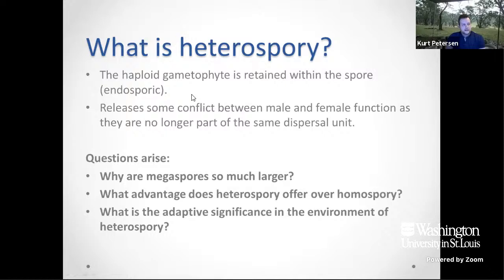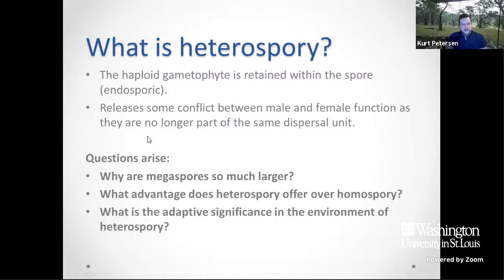Another feature of heterospory is that the haploid gametophytes are retained within the spore — they don't grow out and become a photosynthetic unit; they develop within the spore. This is termed endospory. Heterospory also releases the conflict between male and female function in the dispersed units, because in homospory, when the two sexes are within the same dispersal unit, selection can't act on male or female function independently. This raises questions: why are megaspores so much larger, what advantage does heterospory offer over homospory, and what is the adaptive significance of heterospory in the environment?